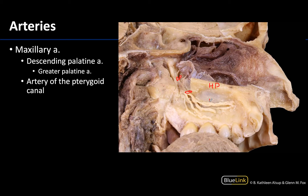Important note: some sources don't differentiate between the greater palatine and the descending palatine — they will call it one of those names for the entire pathway. For our purposes, within the greater palatine canal that is going to be the descending palatine, and then once it has gone through the greater palatine foramen and is on the hard palate region, we're going to start calling it the greater palatine artery. So if you see it on the hard palate, you're going to ID it as the greater palatine.